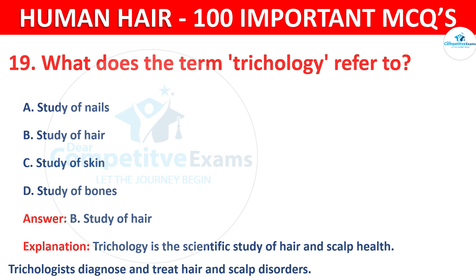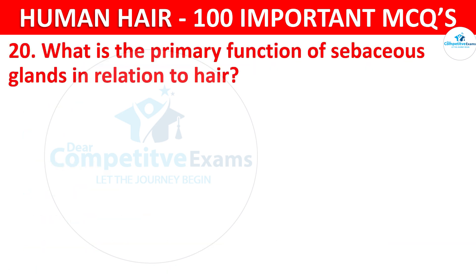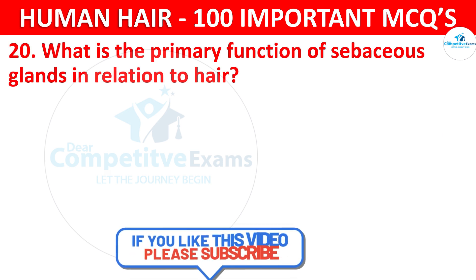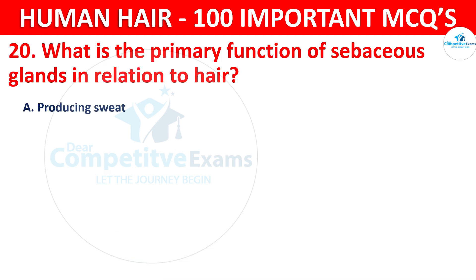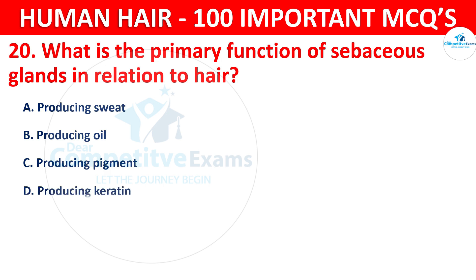Question number 20. What is the primary function of sebaceous glands in relation to hair? The options are producing sweat, producing oil, producing pigment, or producing keratin.